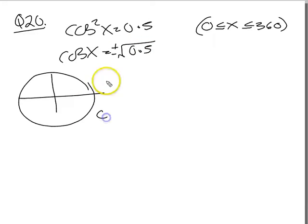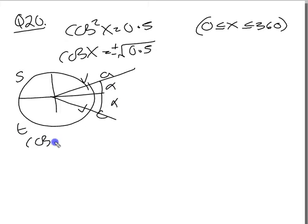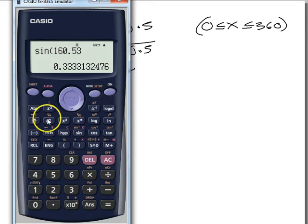So write CAST. Cos is positive here and here, alpha and here cos alpha equals plus square root 0.5. So alpha is equal to shift cos 0.5, alpha equals shift cos, bracket square root of 0.5, bracket.